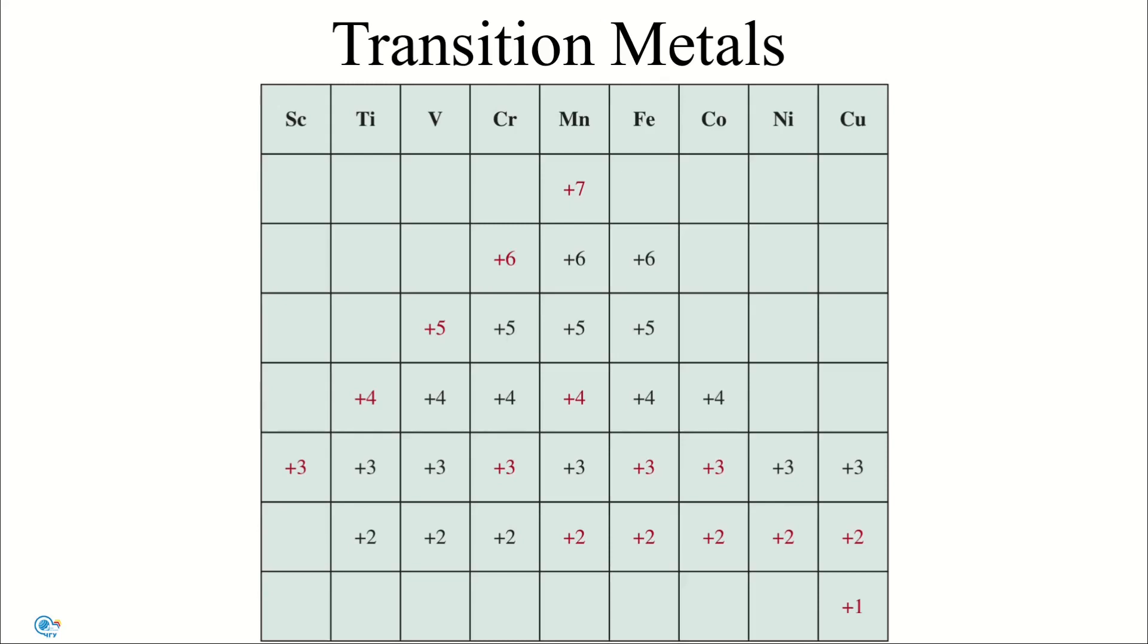Transition metals usually exhibit their highest oxidation states in compounds with very electronegative elements such as oxygen and fluorine.